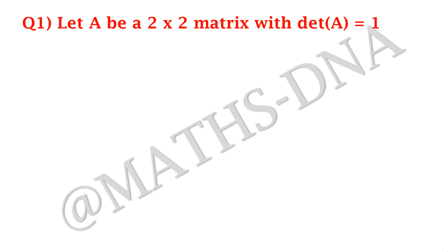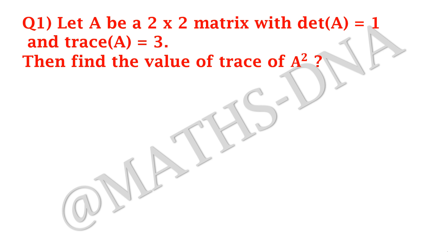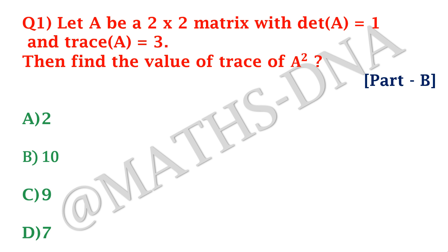Now let us begin. The first question we are going to solve is: let A be a 2×2 matrix with determinant of A equals 1 and trace of A equals 3. Find the value of trace of A squared. The options are A) 2, B) 10, C) 9, and D) 7.